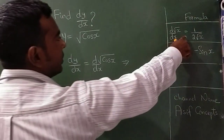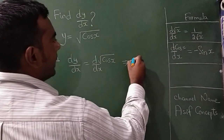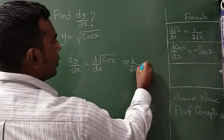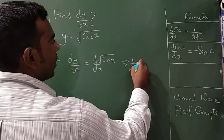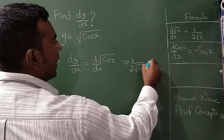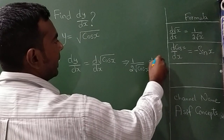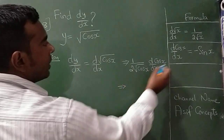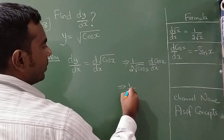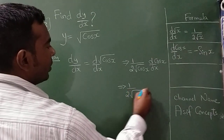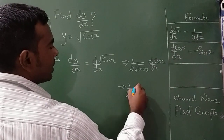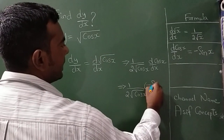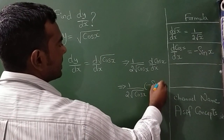According to this formula, I can write 1 upon 2 square root of cos x, and by chain rule, d by dx of cos x is minus sin x.